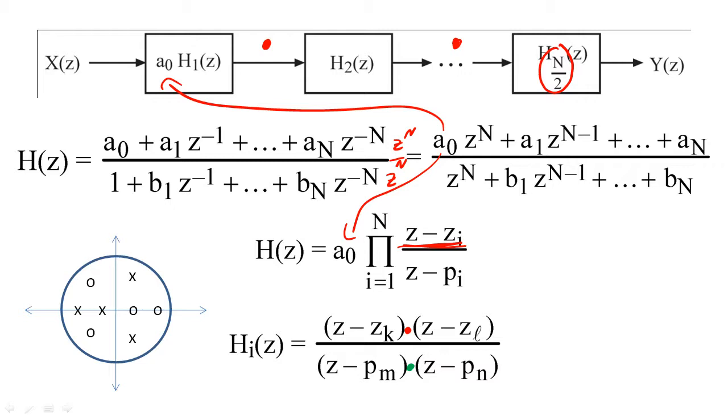So, z sub k and z sub l must be complex conjugates and p sub m and p sub n must be complex conjugates for every set of complex poles and zeros. Once we have finished pairing all the complex sets together, we can then use any set of real coefficients together in our numerator or denominator.